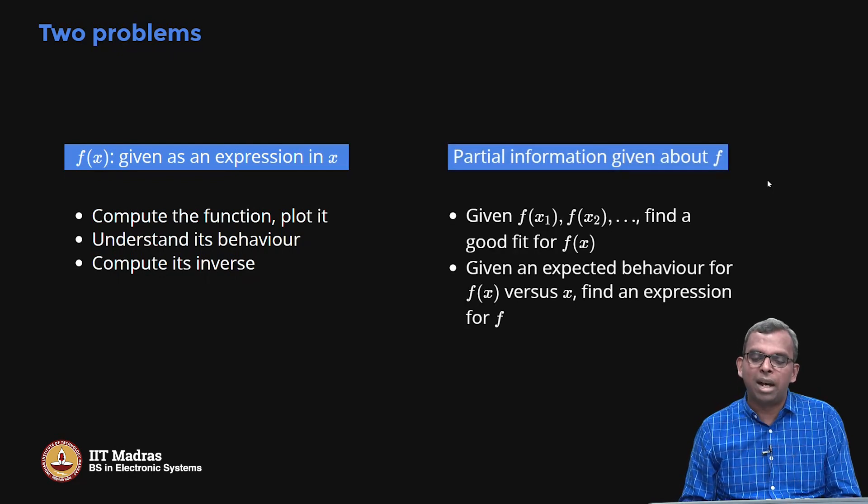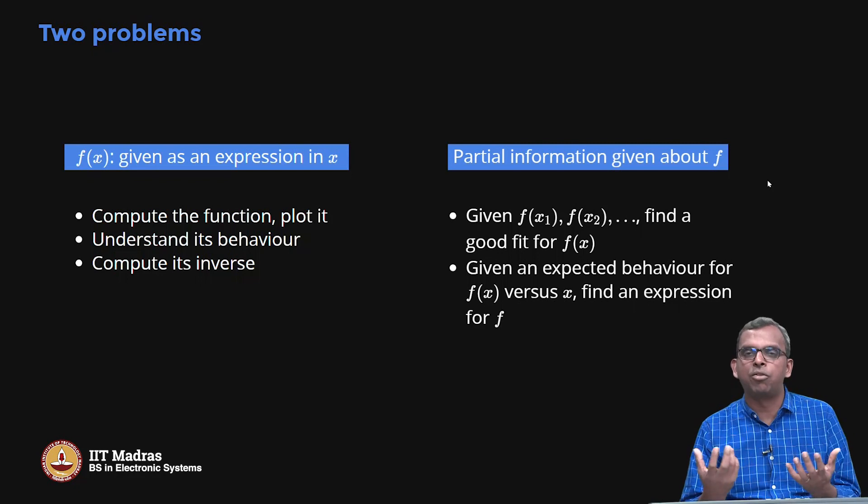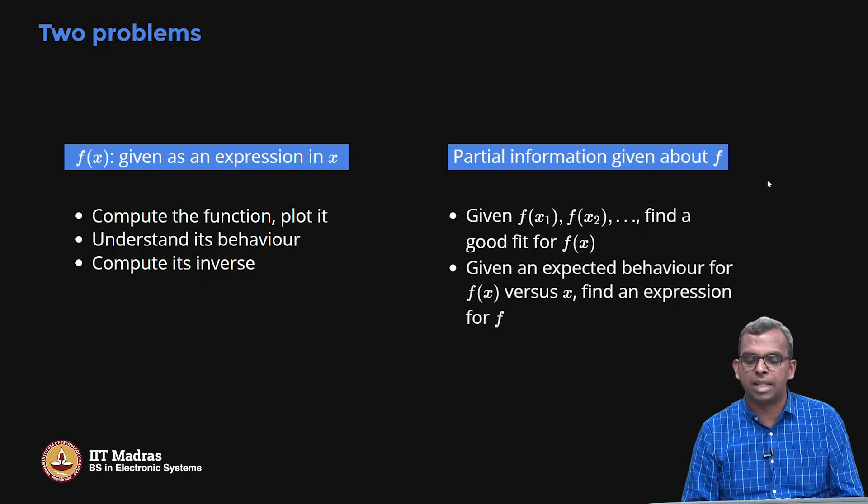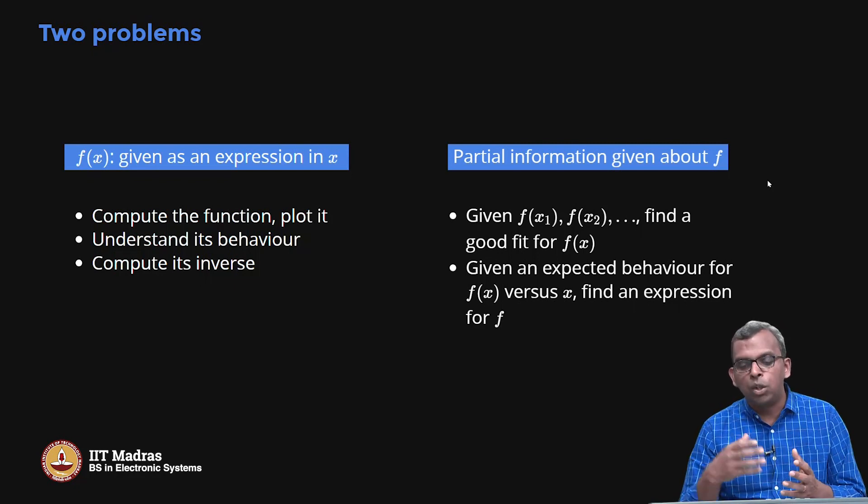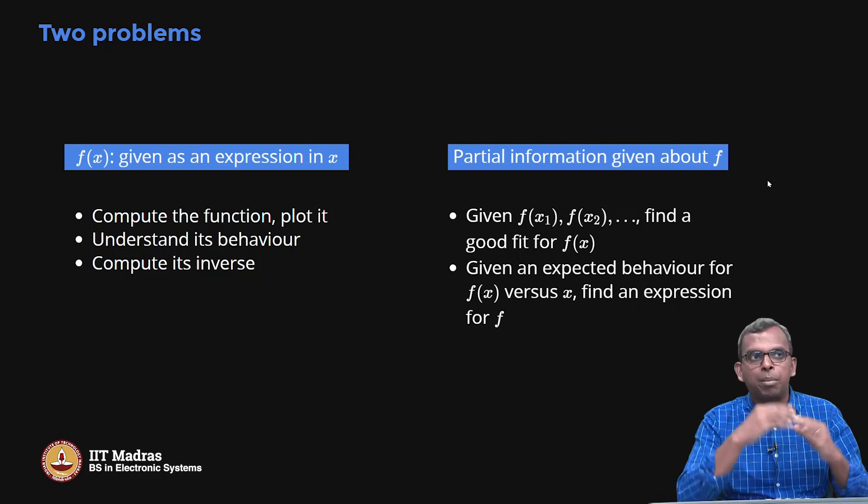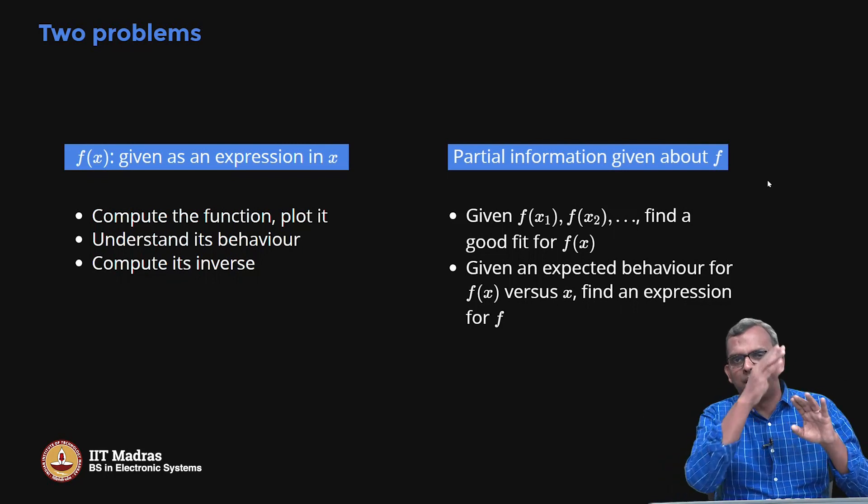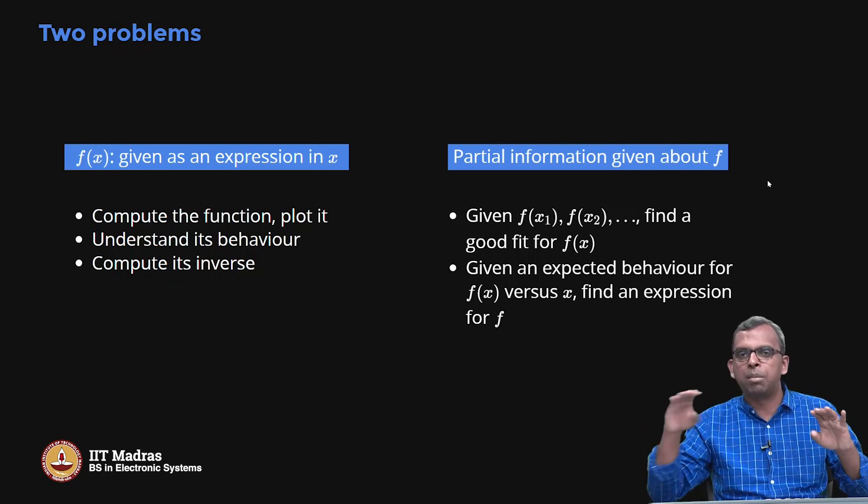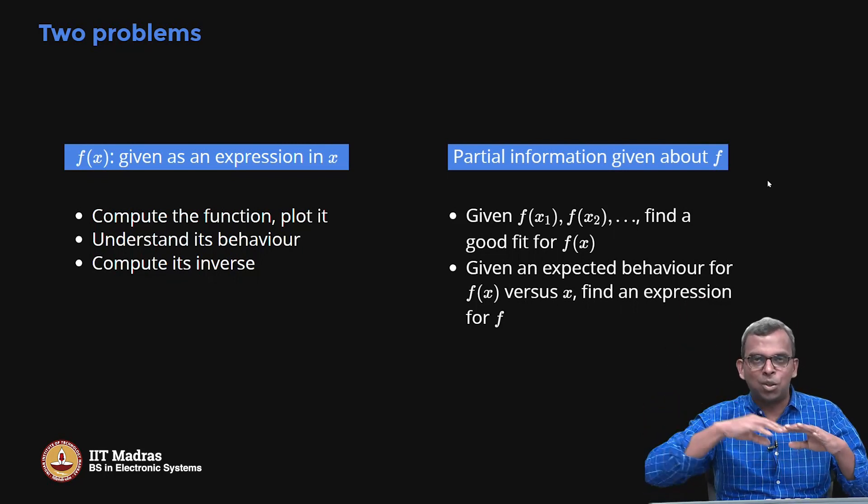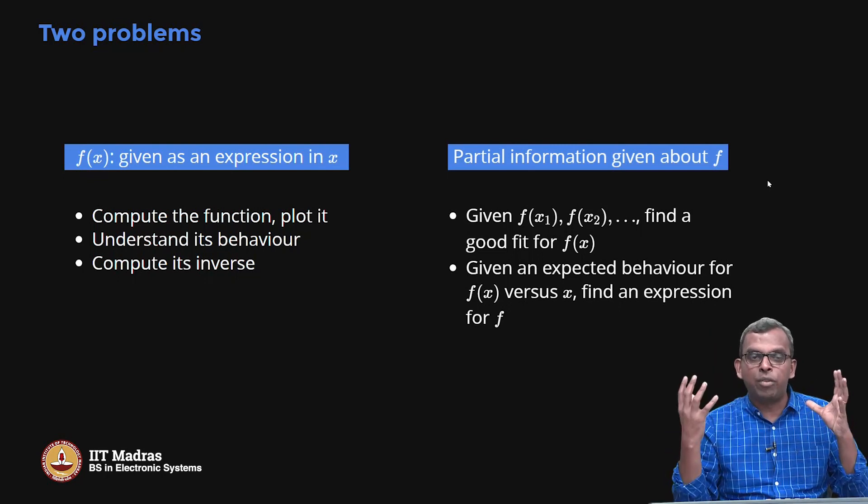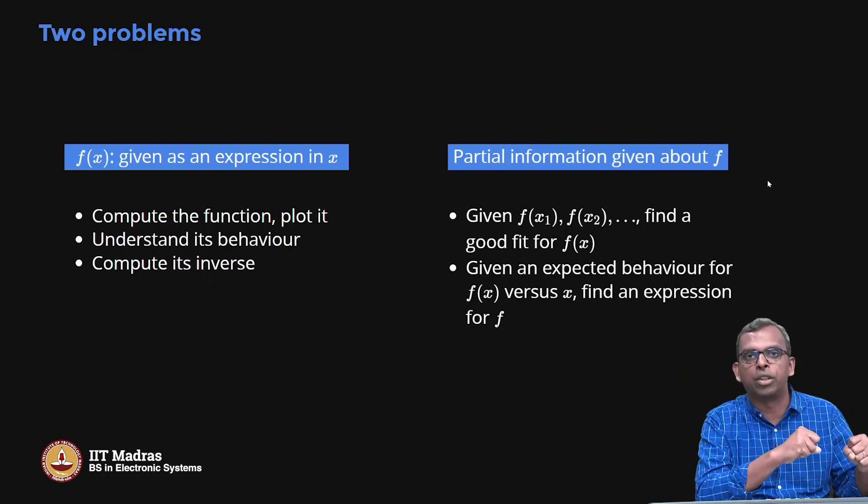Quite often, you may have to do a reverse. You will only have partial information about a function f that you desire. For instance, you may know the value of the function at some points and you may want to find a good fit for f. And depending on the shape of those points, maybe it falls exponentially, maybe it is periodic, maybe it is linear, maybe it is quadratic. So depending on the shape of the points, you may have to visualize a function and find a good fit for the function.